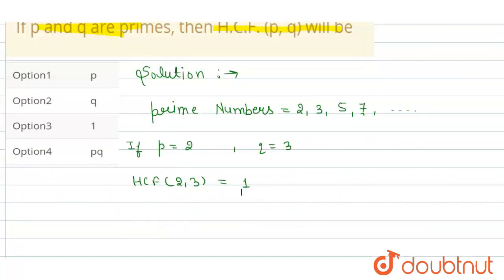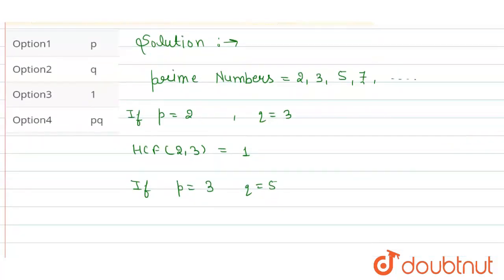Similarly, if I put it again, if P is equal to 3 and Q is equal to 5, then my HCF will be equal to HCF of 3 and 5. How much will it come to me? It will also be 1.